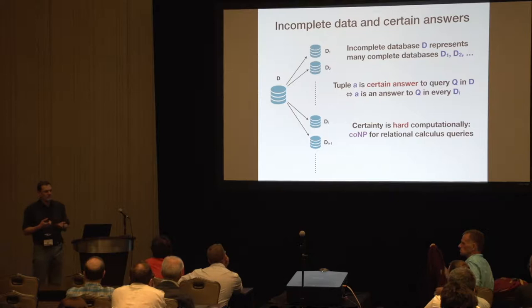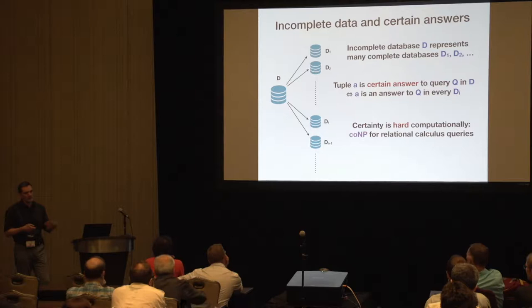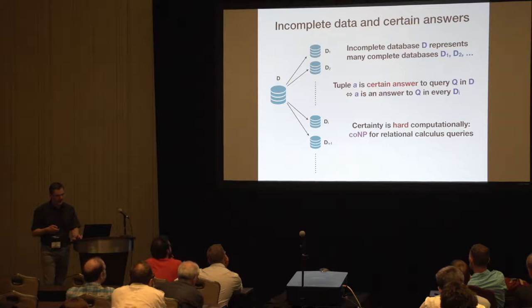It's a very nice and natural notion. The problem is that it's computationally hard — for instance, under the most standard model of incompleteness, it will be co-NP hard for relational calculus queries.